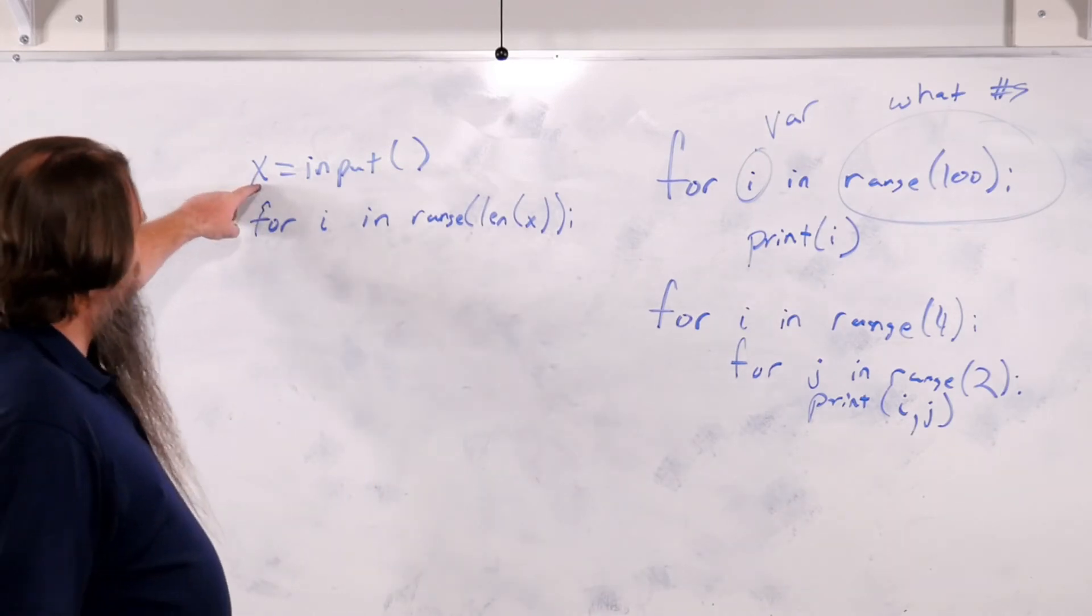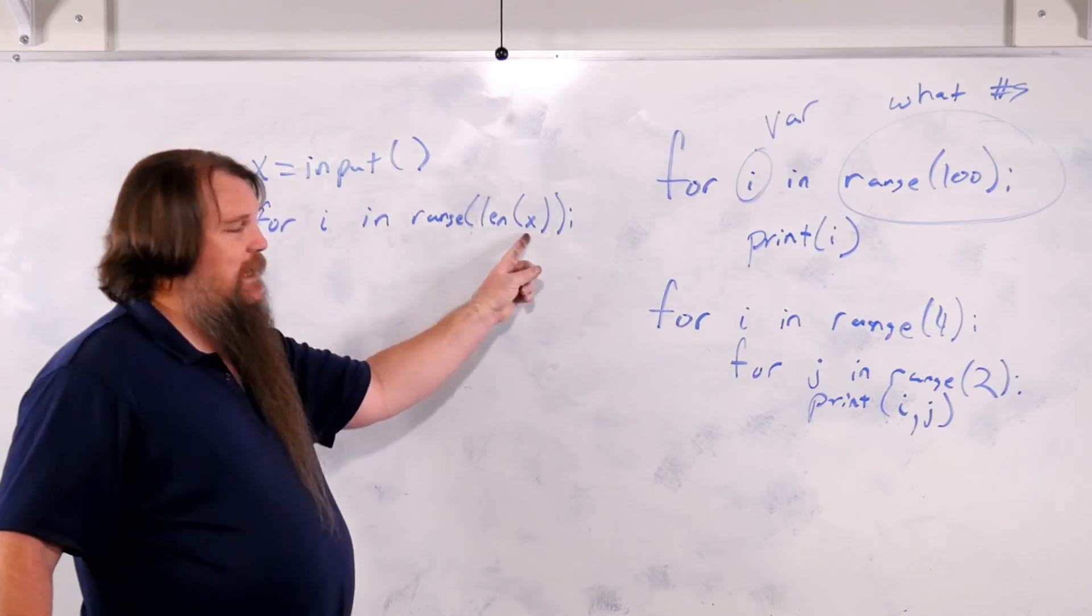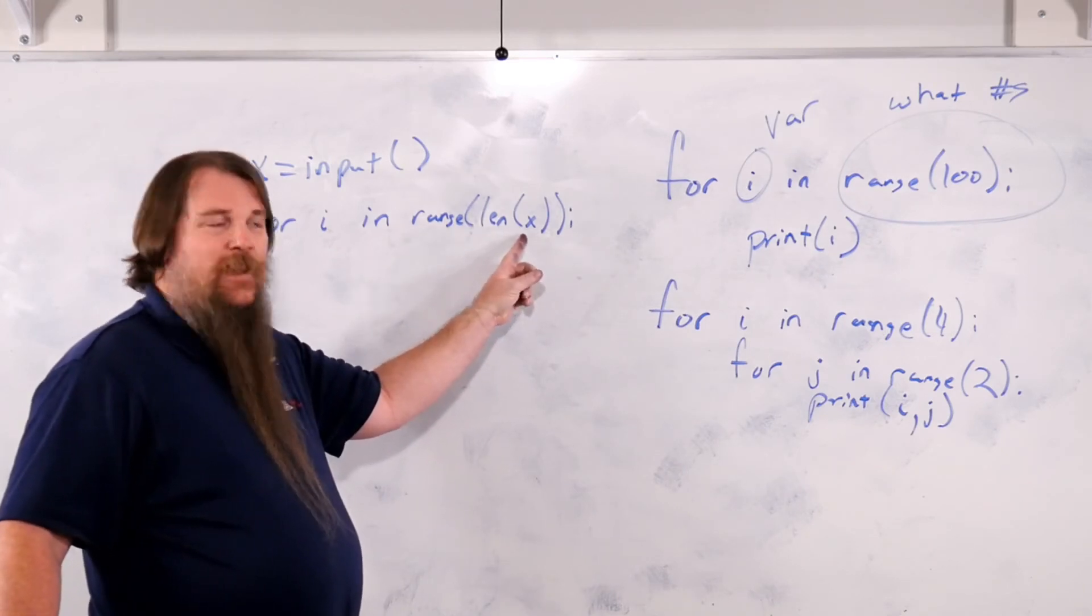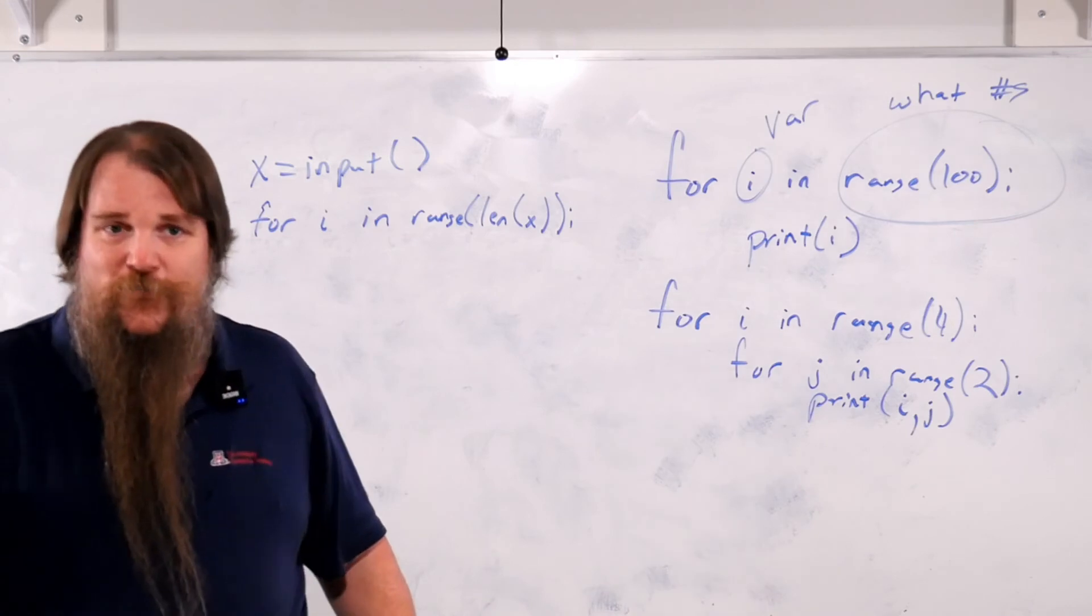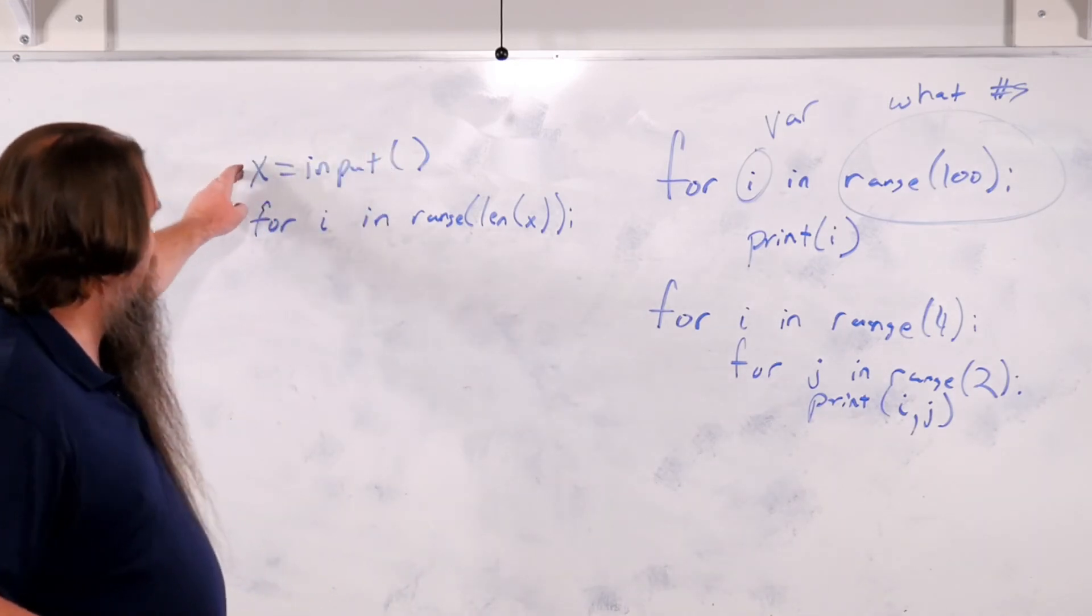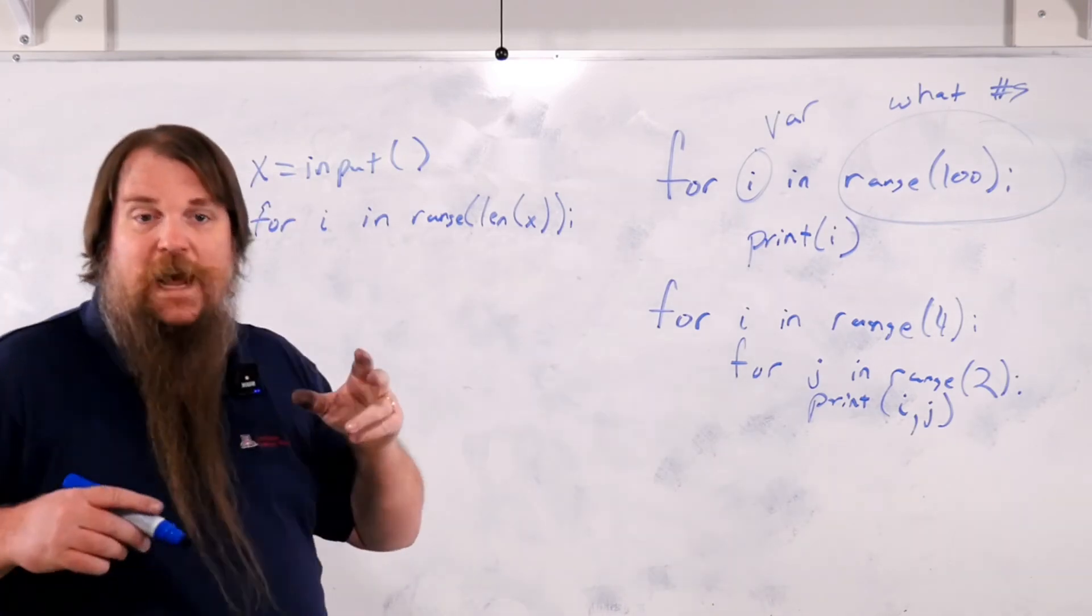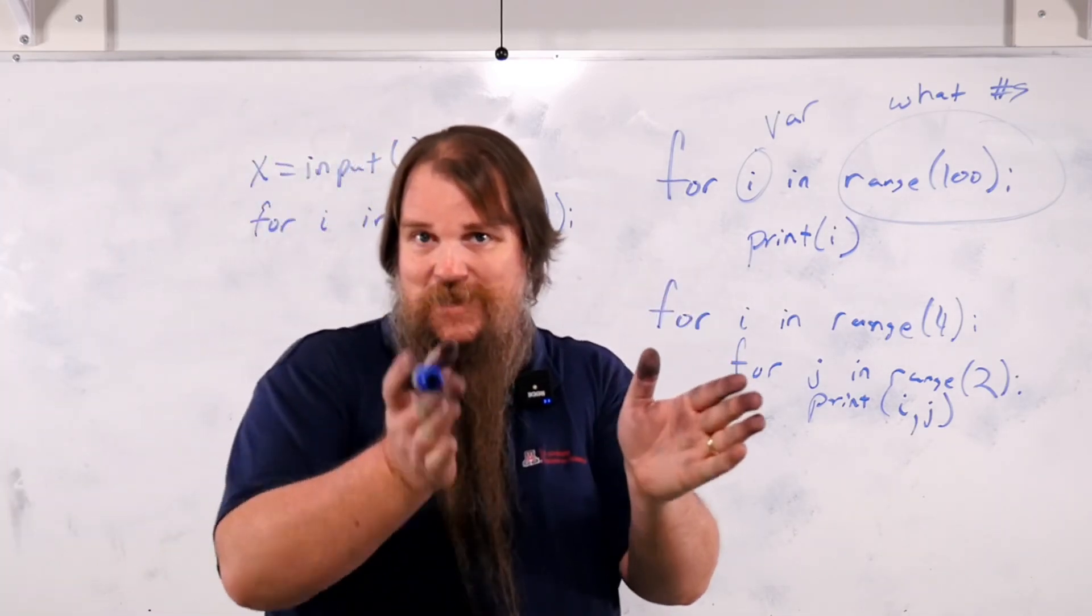It's going to take the variable x, which was whatever was read from the user, going to ask for the length of that string, and then it's going to do a range to iterate over that range. So if there are 10 characters in x, then it will do range 10, so it will iterate from 0 to 9.